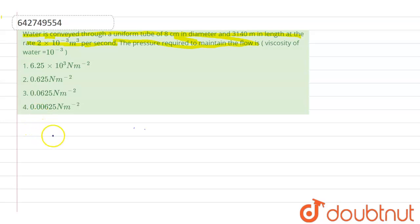To solve this problem we need to apply Poiseuille's equation. So by Poiseuille's equation, the rate of flow will be equal to pi into pressure into r to the power 4 upon 8 into eta into l.